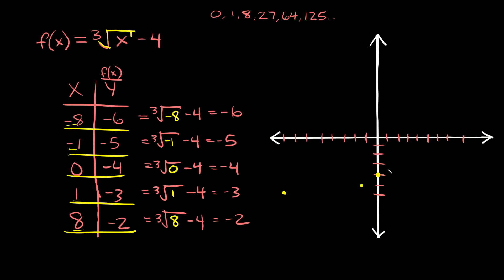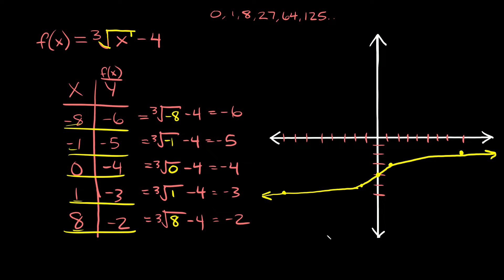Then 1, negative 3 is right there. And 8, negative 2 is right there. So then you'll see that our graph goes like that in both directions. So all of your cube root graphs are always going to look something like that, or it might go in the other direction.